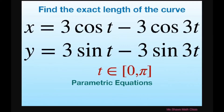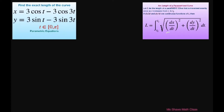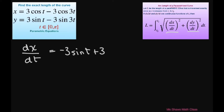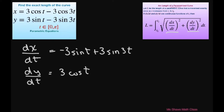Hey everyone, we're going to find the exact length of the curve for our parametric equations over the interval zero to pi. We're going to use this formula here for arc length, so we're going to have to differentiate x and y with respect to t. The derivative of x with respect to t gives negative 3 sine of t plus 3 sine of 3t, and the derivative of y with respect to t equals 3 cosine of t minus 3 cosine of 3t.